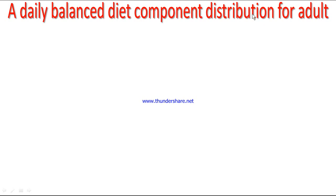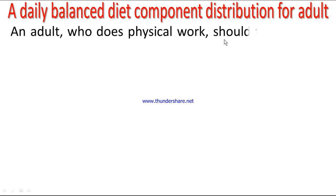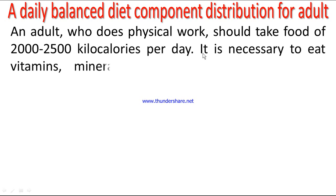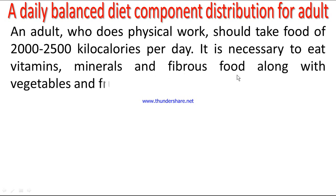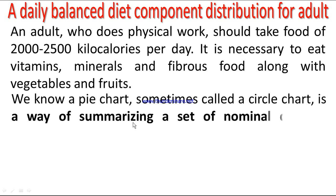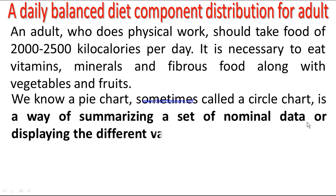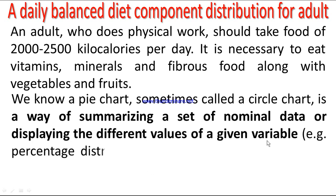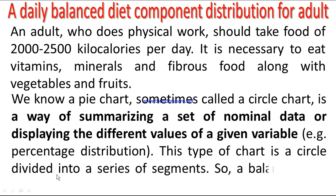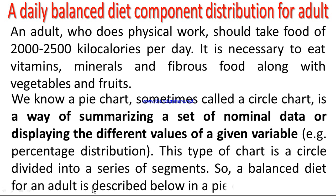A daily balanced diet component distribution for adults: an adult who does physical work should take food of 2000 to 2500 kcal per day. It is necessary to eat vitamins, minerals, and fibrous food along with vegetables and fruits. A pie chart, sometimes called a circle chart, is a way of summarizing a set of nominal data or displaying the different values of a given variable, e.g. percentage distribution. This type of chart is a circle divided into a series of segments. A balanced diet for an adult is described below in a pie chart.